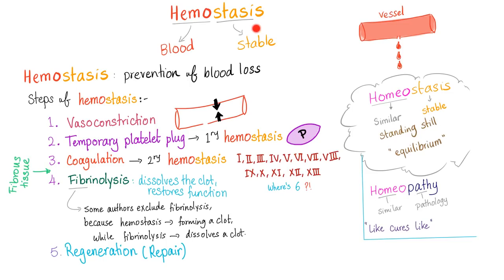Hemostasis is prevention of blood loss. It has many steps: vasoconstriction, then temporary platelet plug, also known as primary hemostasis, then coagulation cascade, also known as secondary hemostasis, then fibrinolysis.